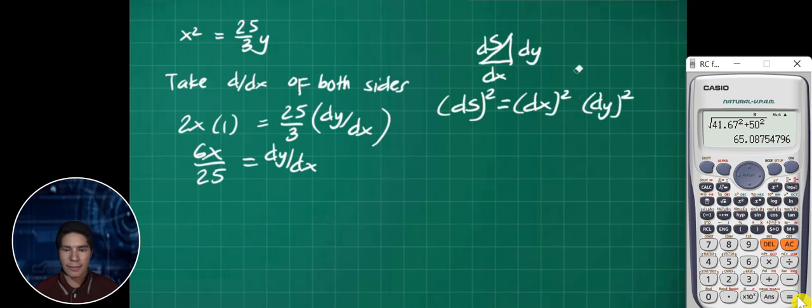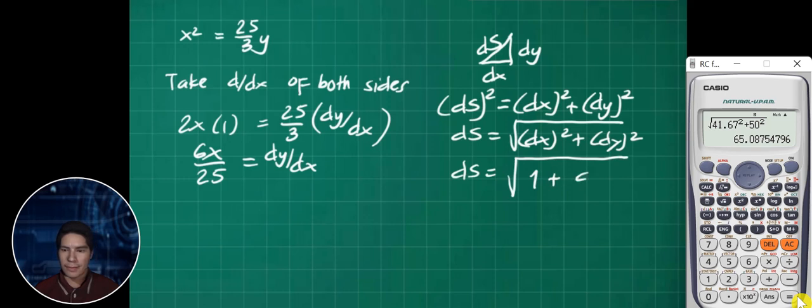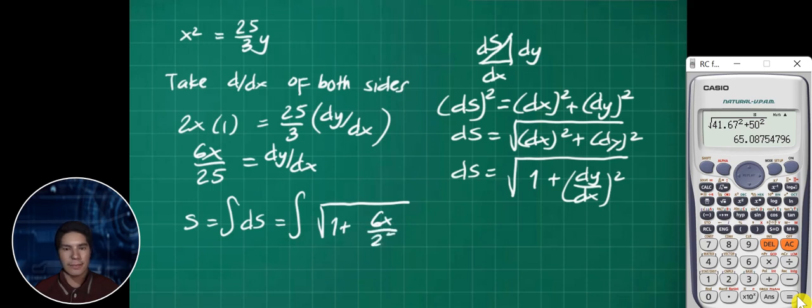We have a formula in calculus to compute the arc length. For example, we take an elementary distance dx. We have dx and dy. Therefore, ds squared equals dx squared plus dy squared.